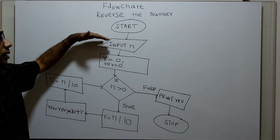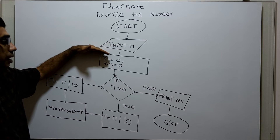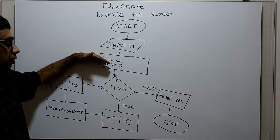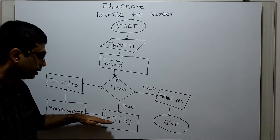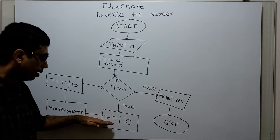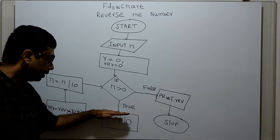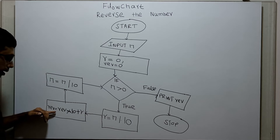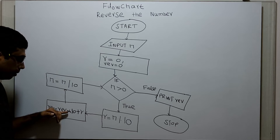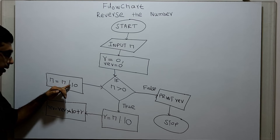Start: input n from the user. Initialize variable R equal to 0, REV equal to 0. If n greater than 0 is true, calculate R equal to n mod 10 — n is divided by 10 and the remainder is stored in R. Next, REV equal to REV multiplied by 10 plus R. Then n equal to n divided by 10, which is an integer division.